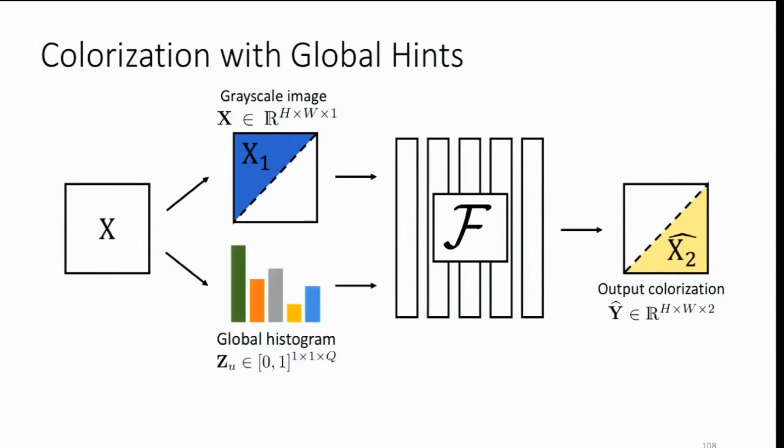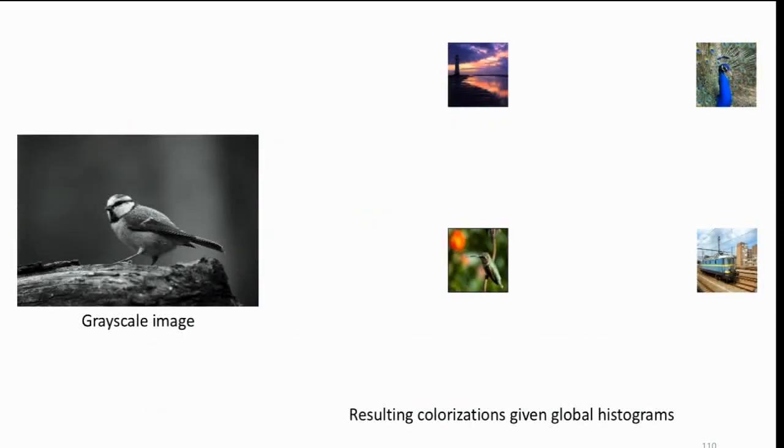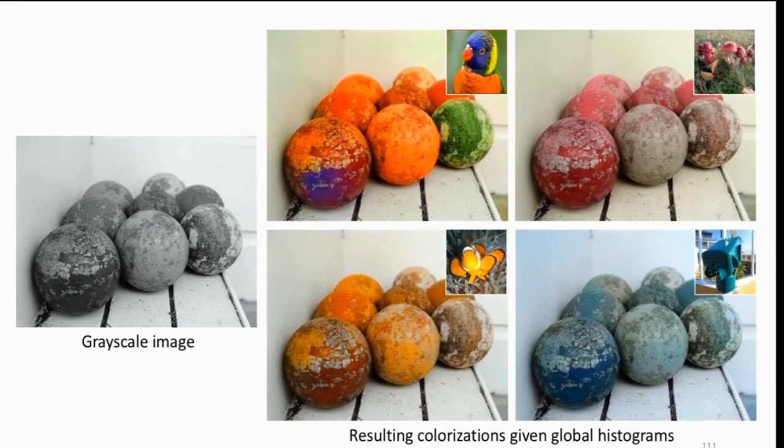Finally, we took the system and wanted to see if we could take in other hints as well. Instead of taking local user points, we also took in a global histogram. We wanted to see if we could use this end-to-end approach with any kind of marginal statistics of the output. Here are the results. We're trying to do the style transfer thing. Given this input image, we wanted the color histogram from the top right here, and here are the results we get. This is another way of flipping through the multiple modes or possible colorizations of this image.